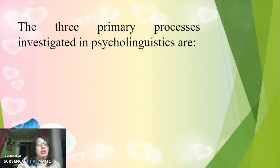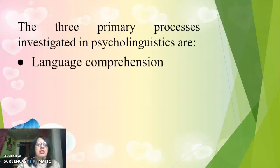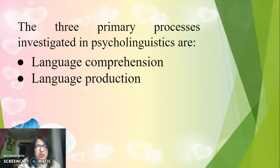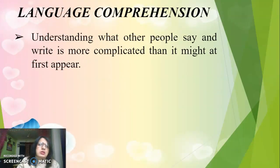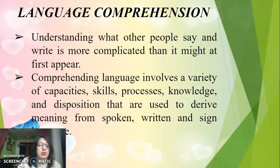There are three primary processes investigated in psycholinguistics: language comprehension, language production, and language acquisition. Language comprehension means understanding what other people say and write — it is more complicated than it might first appear. Comprehending language involves a variety of capacities, skills, processes, knowledge, and dispositions used to derive meaning from spoken, written, or signed language.